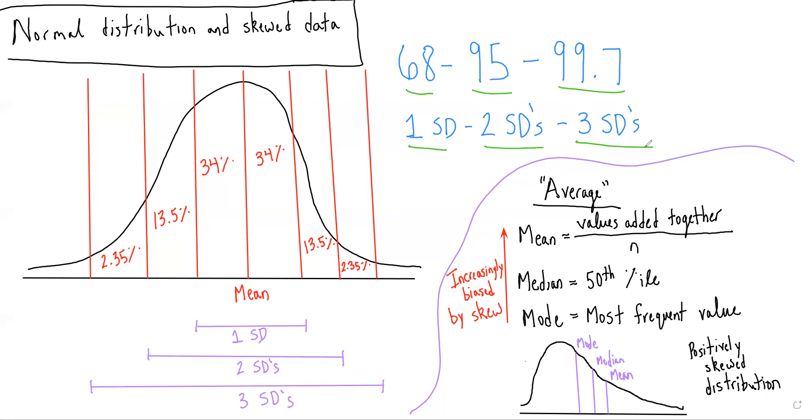Therefore, if you break it down as I have on the left-hand side, we can see that from our mean value, if we go one standard deviation in either direction, we have 68% of our data - so 34% on either side within one standard deviation of the mean.